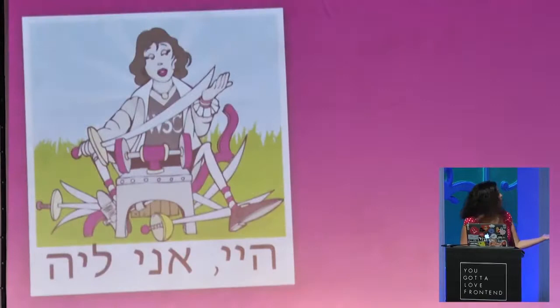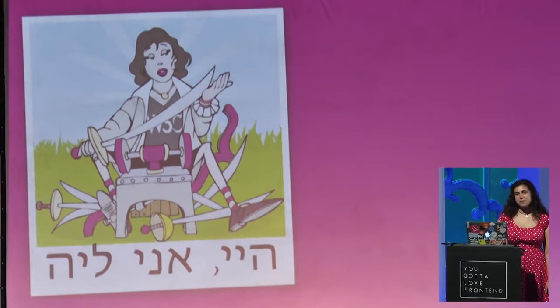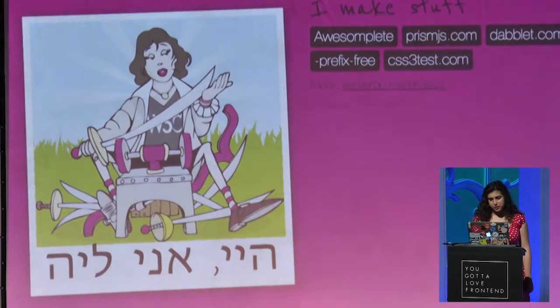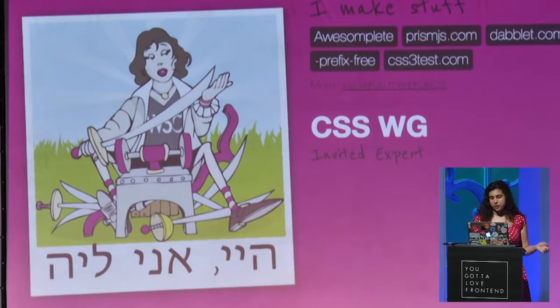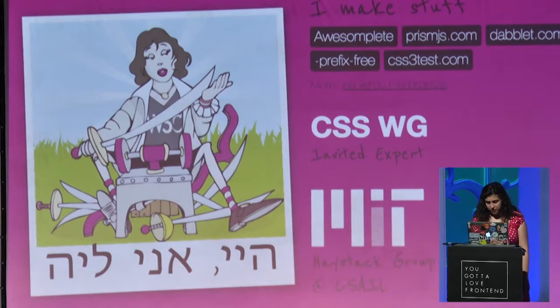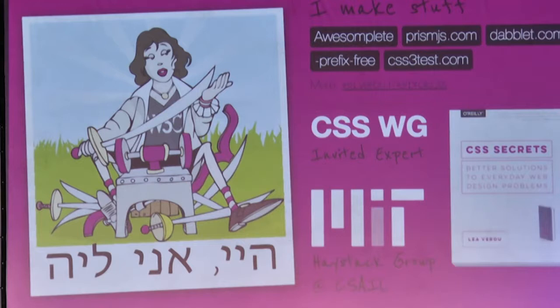Hello everybody, I'm Leah. If you've ever heard my name before, it's probably due to one of my open source projects. Some of them are listed here; the rest are on GitHub. I'm an invited expert in the working group, which mainly means that we gather four times a year and we spend increasing amounts of time talking about issues and edge cases of decreasing likelihood. As my day-to-day job, I do human-computer interaction research at MIT, and I recently published a book. A lot of the material in this talk is also Secret Number 14 in the book, if you're interested in reading more about it.